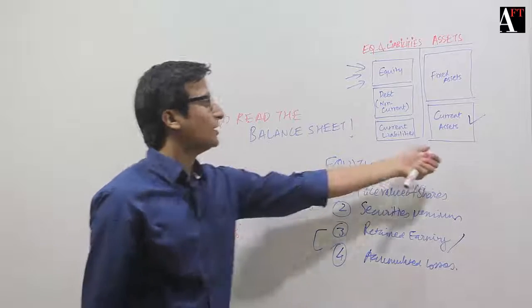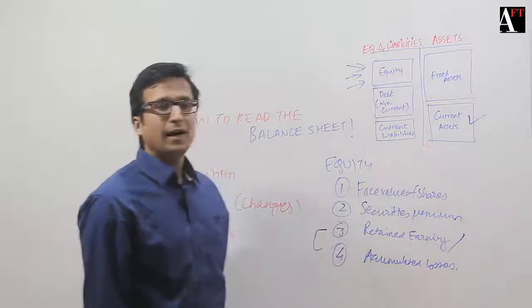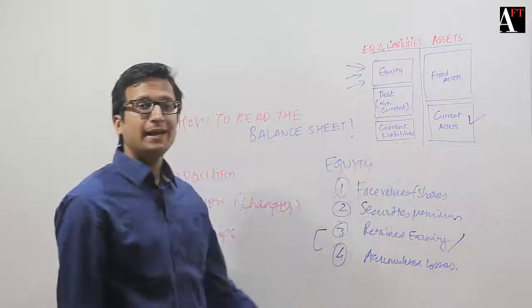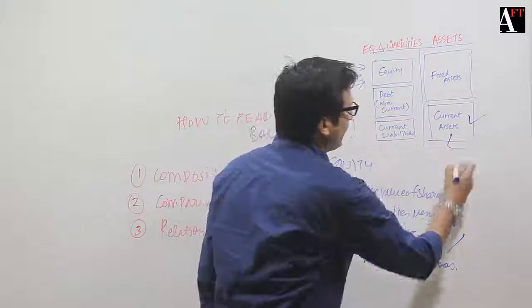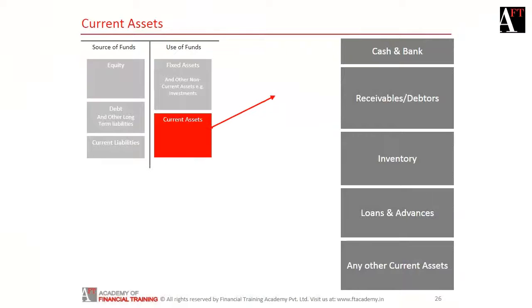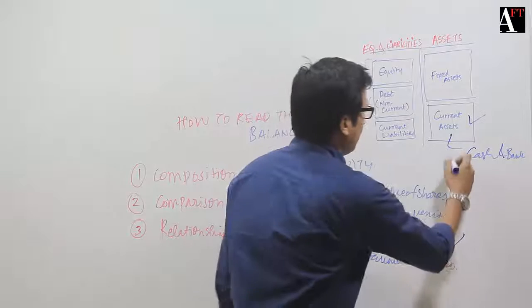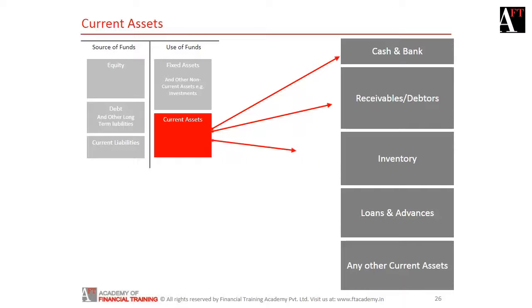When I do that, I again break it up and analyze different components of current assets, which means I'll be looking at cash and bank, receivables or debtors, inventory, loans and advances, and any other current assets.